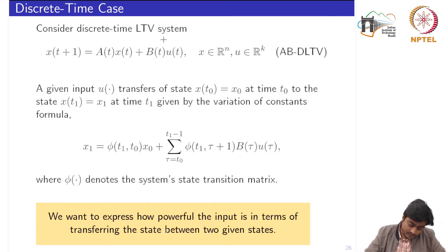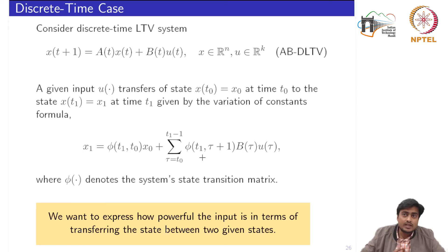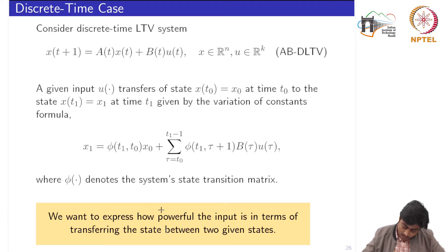Consider the discrete time LTV system given by the A and B pairs, where t belongs to the set of integers. A given input u transfers the state x0 at time t0 to the state x1 at time t1 given by the variation of constants formula. We use similar concepts to those we started with during the analysis for the linear systems, to express how powerful the input is in terms of transferring the state between two given states.